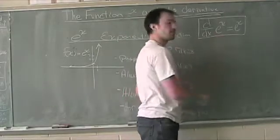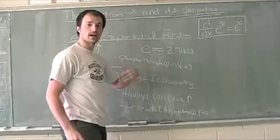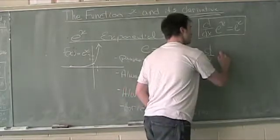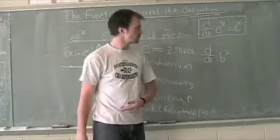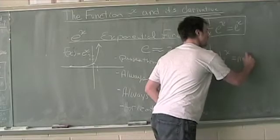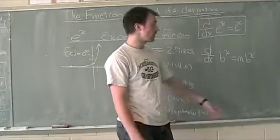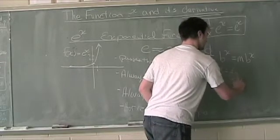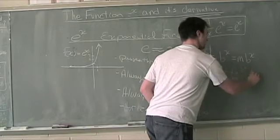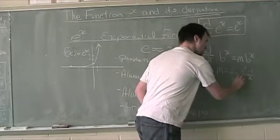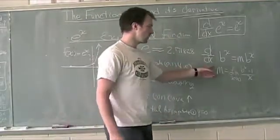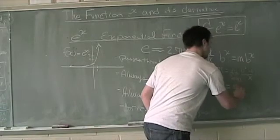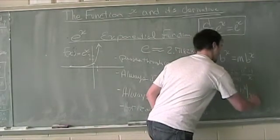The way we define derivatives of exponential functions — whether it's e to the x, 2 to the x, or any base — in general format, the derivative with respect to x of some b to the x exponential function is going to be equal to m times b to the x. This m value is equal to the limit as x approaches 0 of b to the x minus 1, all divided by x. Another way to state it is that m is equal to the derivative with respect to x of b to the x evaluated at 0.